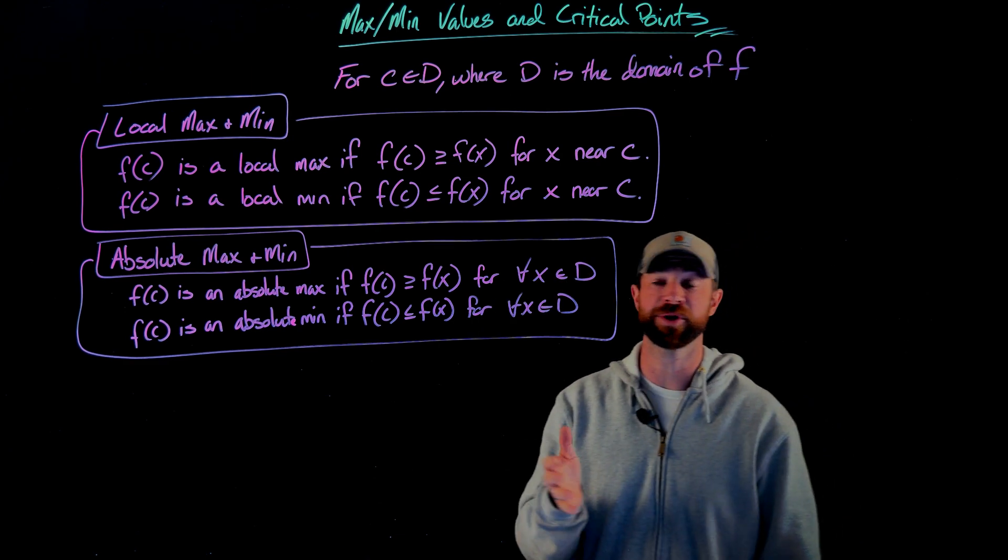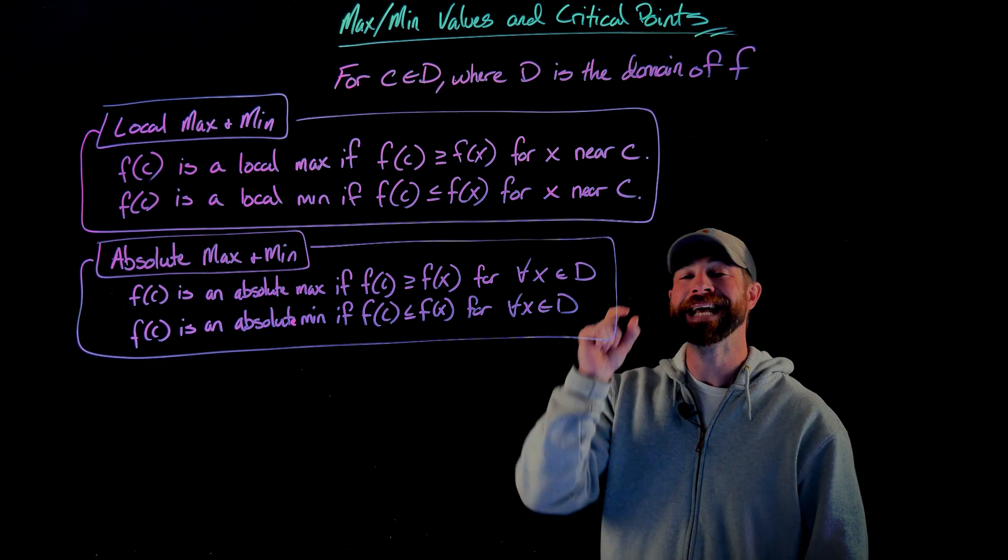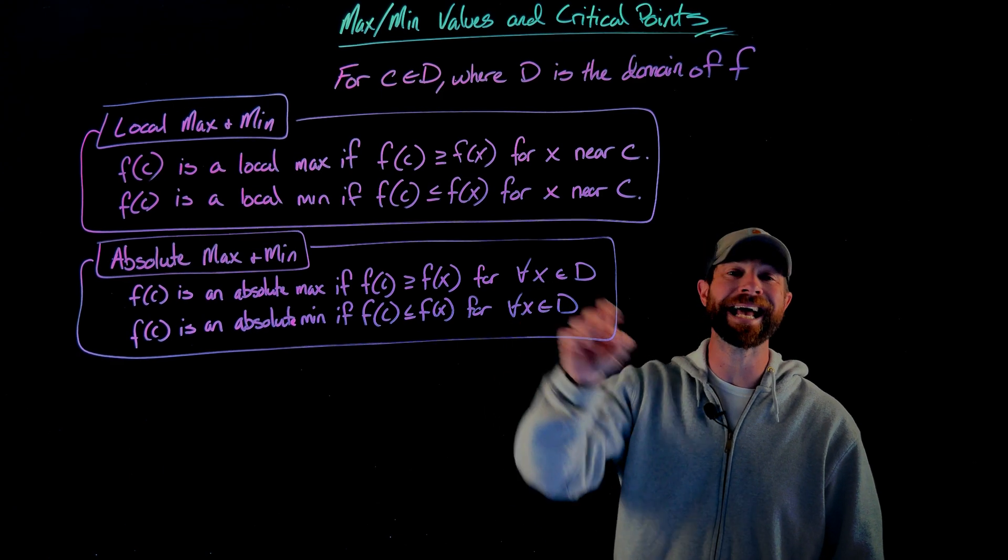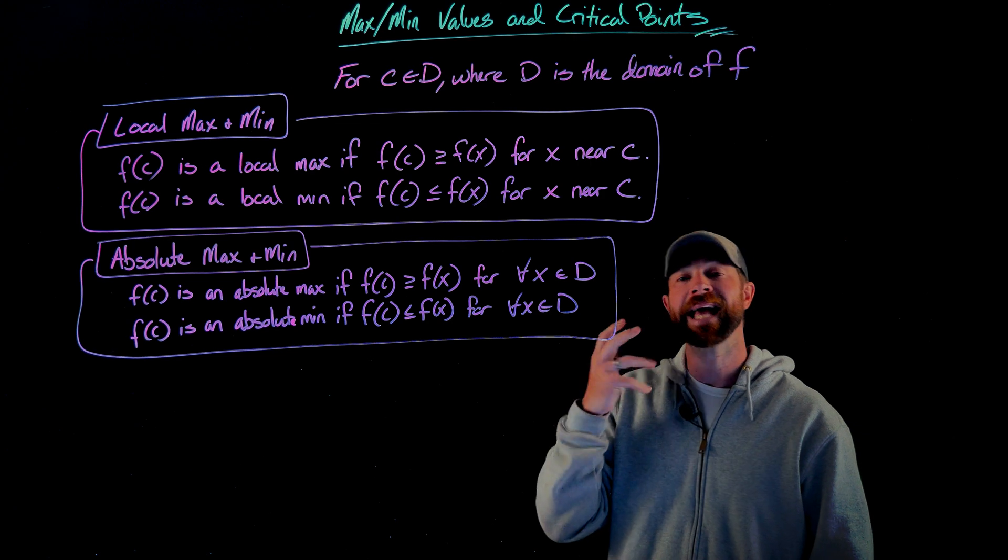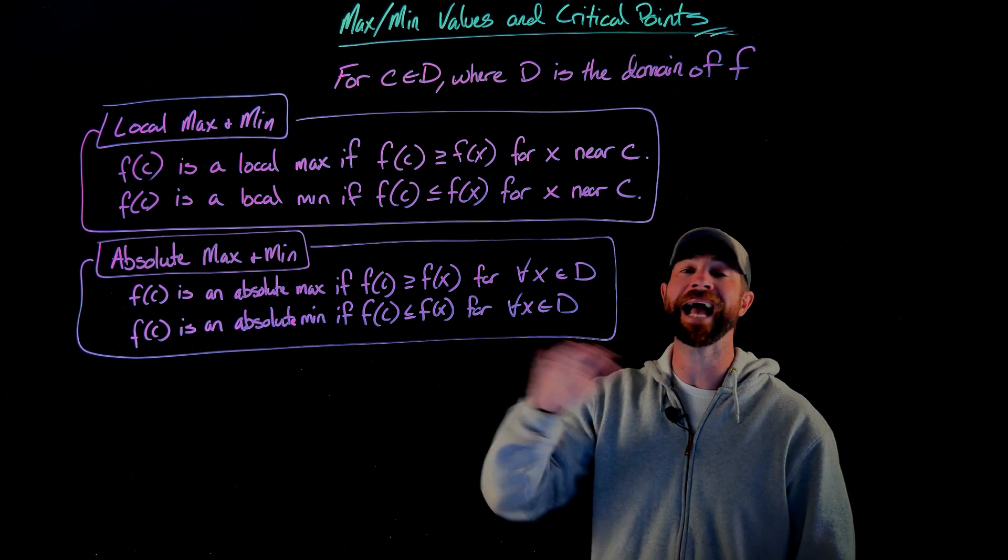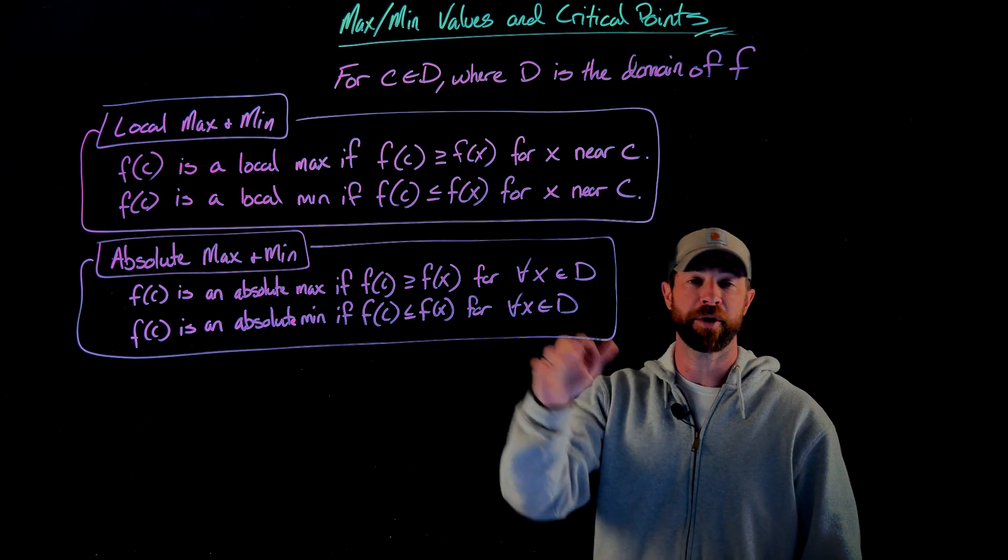The output at x equals c is called an absolute max if it's greater than or equal to every other output value for any x value on the domain, and it's called the local min if the output is less than or equal to any other output value on the domain.